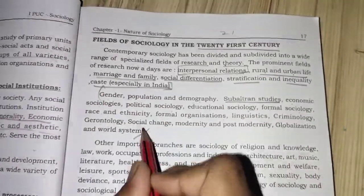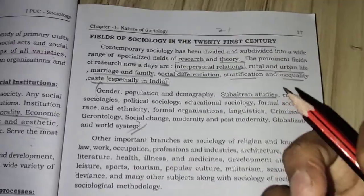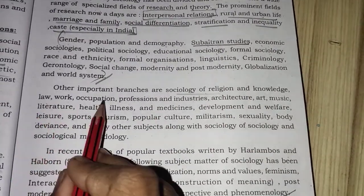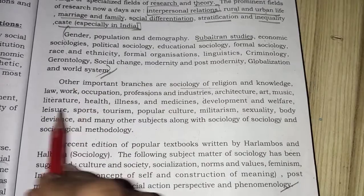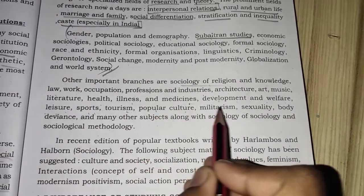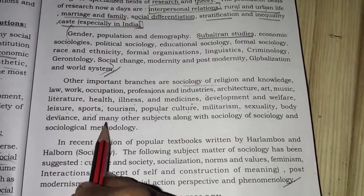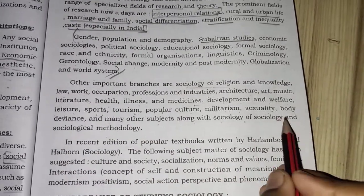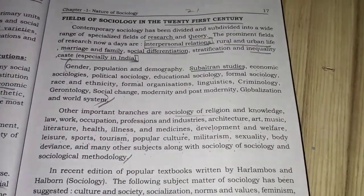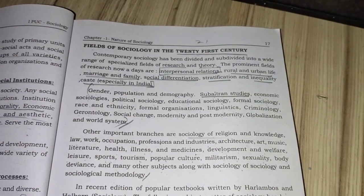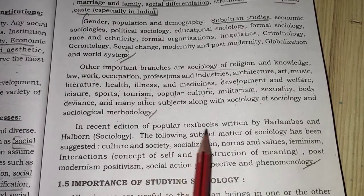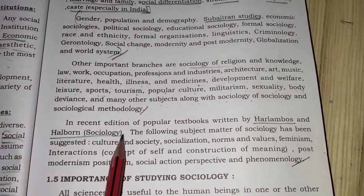Many new fields have been added to sociological study. Other important branches are sociology of religion, knowledge, law, work, occupation and professions, industries, architecture, art, music, literature, health, illness and medicine, development and welfare, leisure, sports, tourism, popular culture, militarism, sexuality, body, deviance, and many other subjects, along with sociology of sociology and sociology of methodology. Society is very vast, and studying society encompasses all these areas.